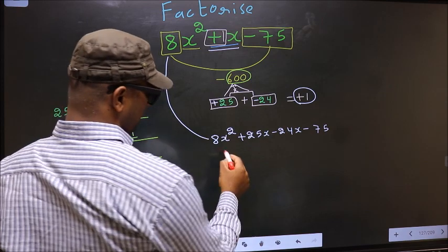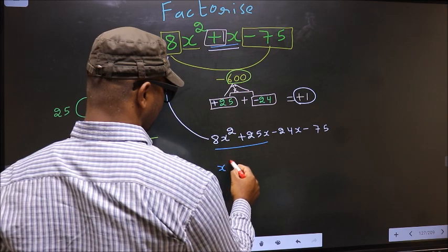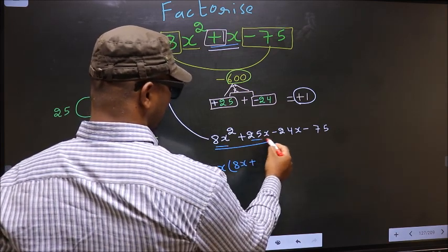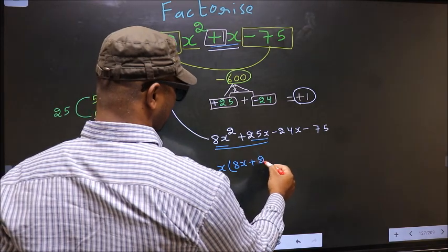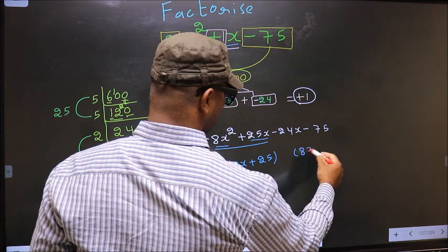Next. Now from these 2 terms what can be taken out common is x. So here you get 8x plus, from this x out you get 25. Now whatever you got here, here also you should get the same thing.